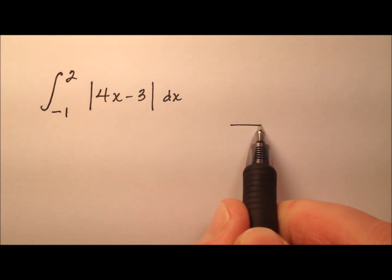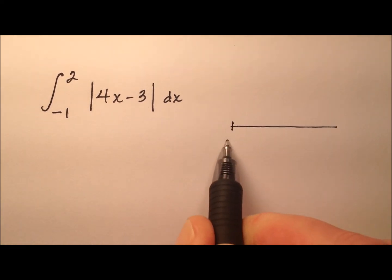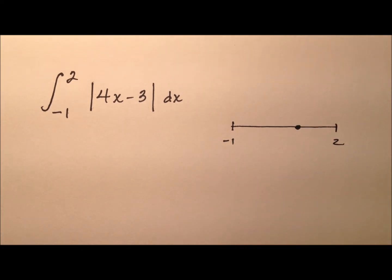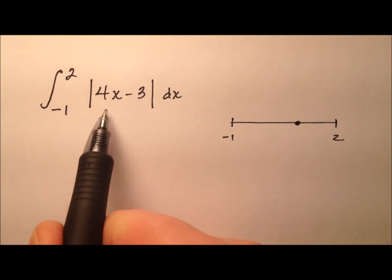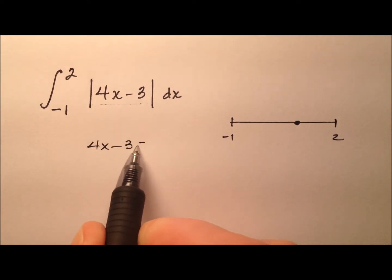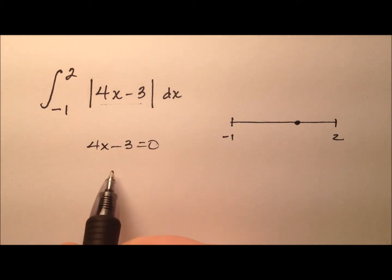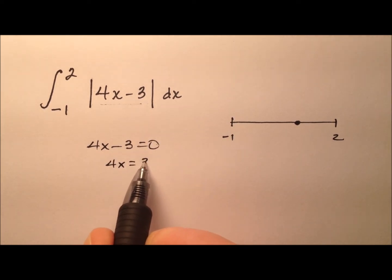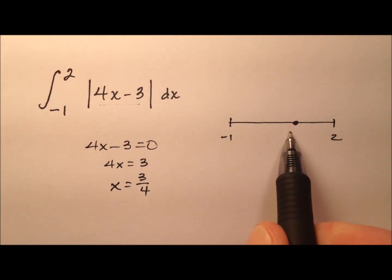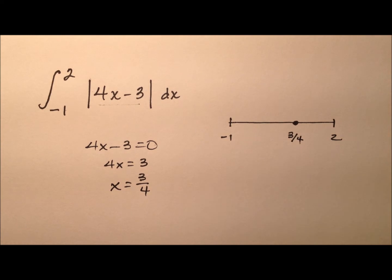So what we had here was our negative 1 to 2, and in between there somewhere is this x-intercept. So let's go ahead and find that x-intercept by taking this 4x minus 3 and setting that equal to 0. When I add 3 to both sides, I'll have 4x equals 3, and then dividing will show me that that x value is 3 fourths. So we're going to go ahead and say this is 3 fourths right there.